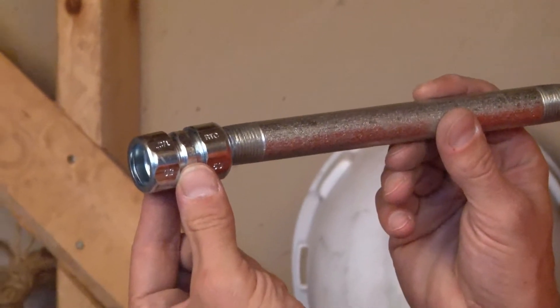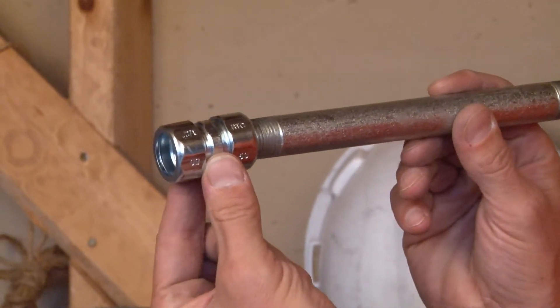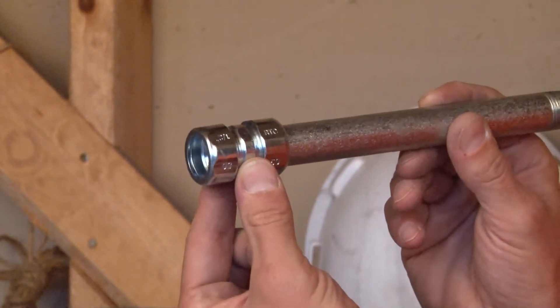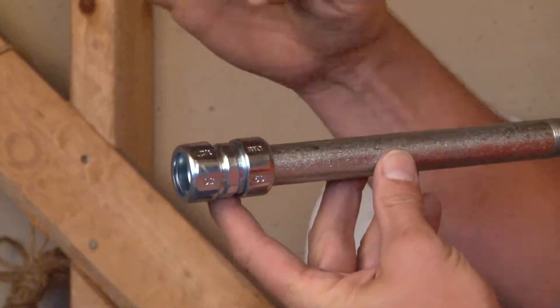You simply slide this fitting directly onto the threaded portion of the conduit until it hits the stopper in the middle of the fitting. Right there.